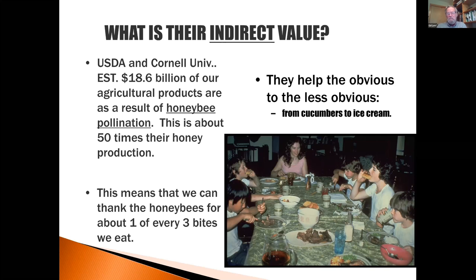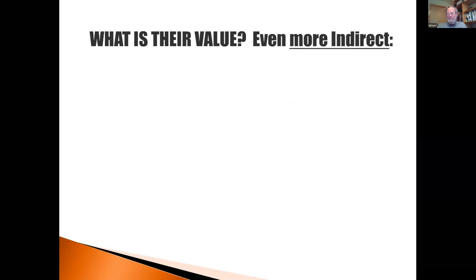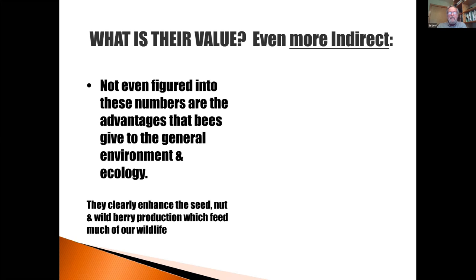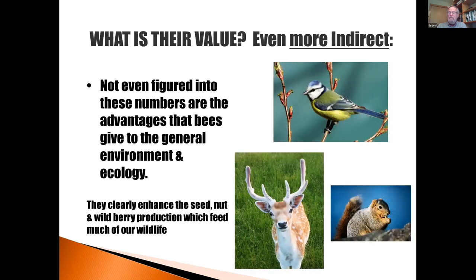This is just a picture of a family thanking bees for one out of three bites. More than that indirect value — 50 times the value of the honey they produce — we need to think of other ways that they add value to our world. Not even figured into those numbers are the advantages that bees give to the general environment and ecology. They clearly enhance the seed, nut, and wild berry production, which feeds much of our wildlife.